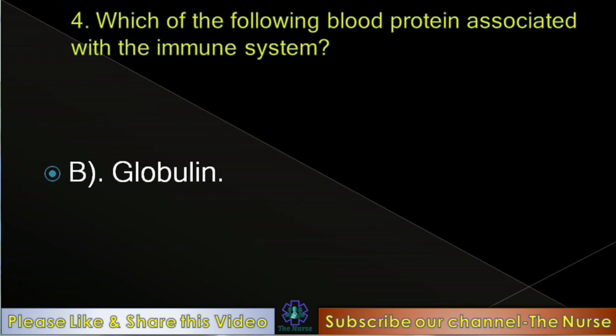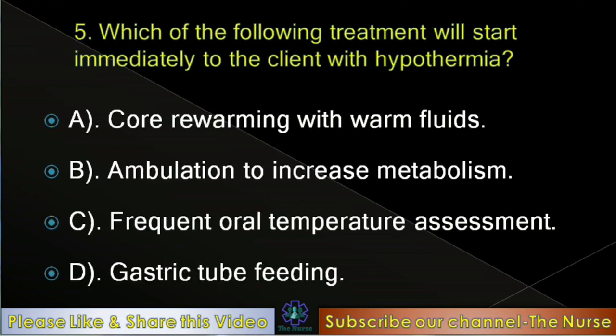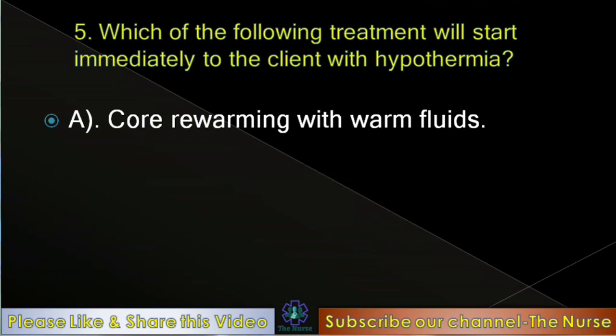Next question: Which of the following treatments will start immediately for a client with hypothermia? Options: Core rewarming with warm fluids, ambulation to increase metabolism, frequent oral temperature assessment, gastric tube feeding. Correct answer: Core rewarming with warm fluids.